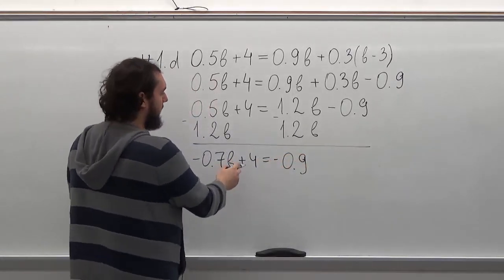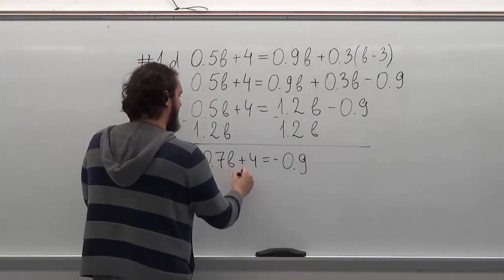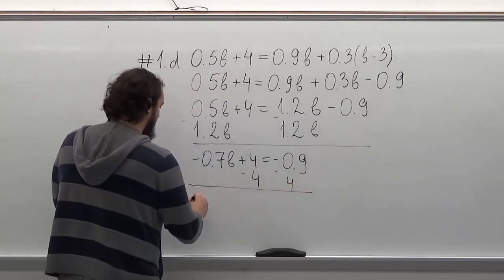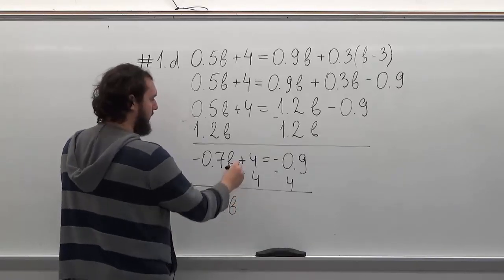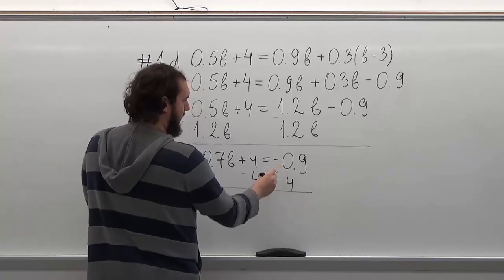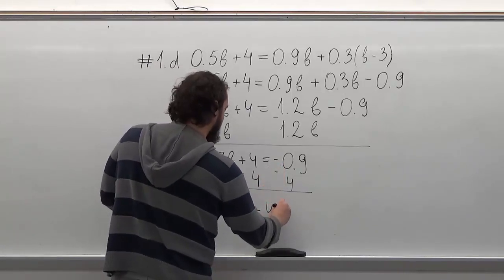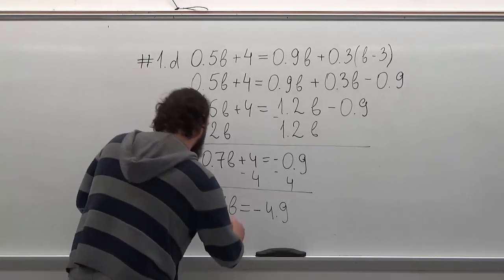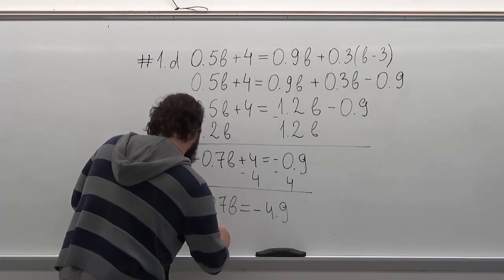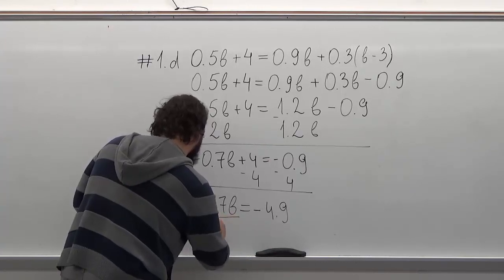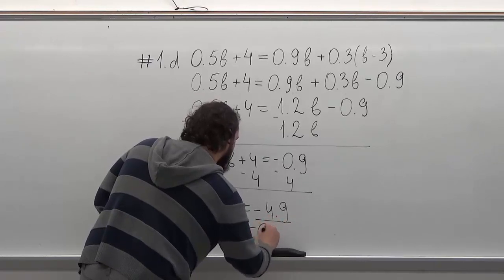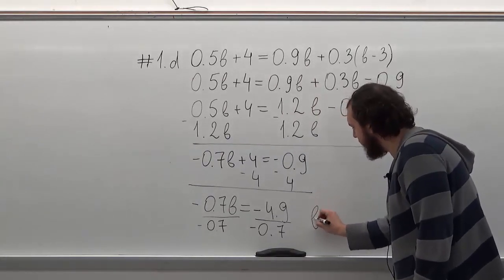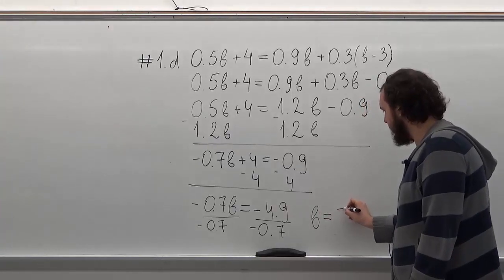Now we need to subtract 4 from both sides of the equation, so here we're going to have minus 0.9. Now all we have to do is just divide both sides of the equation by minus 0.7. So B is equal to 7.